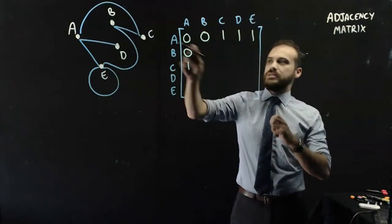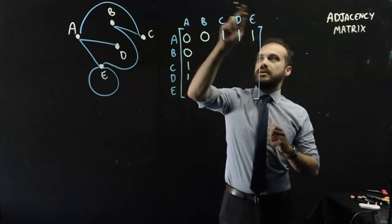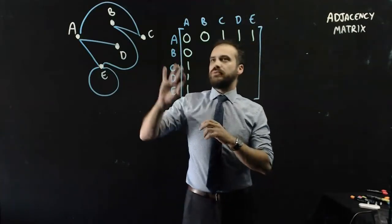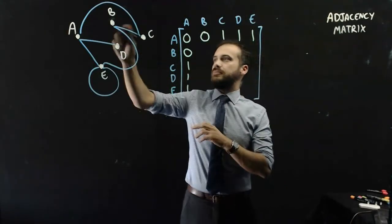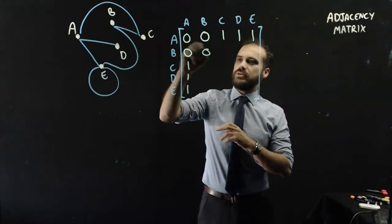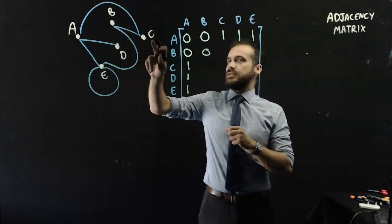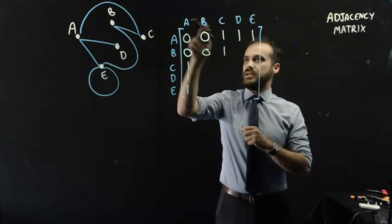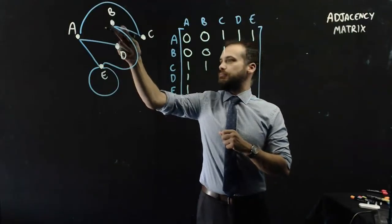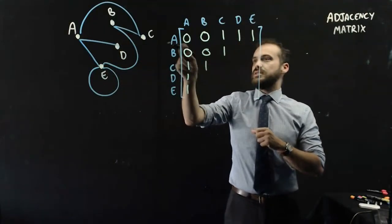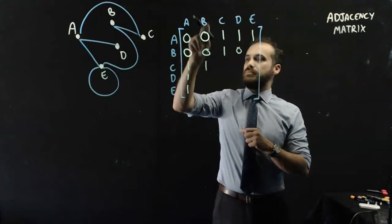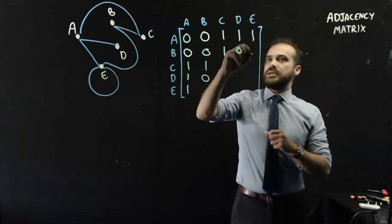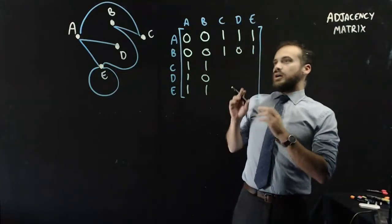Okay, what about all the Bs? We've done B, A, so that's easy. B, B is not connected to itself, so a 0. B, C is connected to each other. B, D is not connected, 0. B, E is connected, 1.